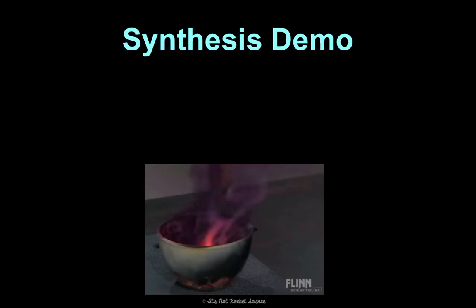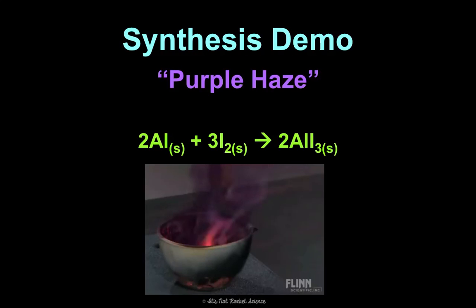We are going to watch a video in class called 'purple haze.' It is taking aluminum and iodine and making aluminum iodide. I can't demonstrate this in my classroom because I don't have a hood and it makes a lot of purple haze, but we'll watch the video in class.